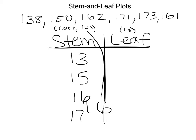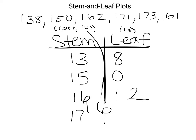To plot the leaves, one stem can have multiple leaves, so the digits in the 1s place are our leaves. Here we have an 8 and a 0. The 16 stem — 160 — has two different leaves, so we can have a 1 and a 2. And our 17 stem has a 1 and a 3. This represents the different numbers in our data set.